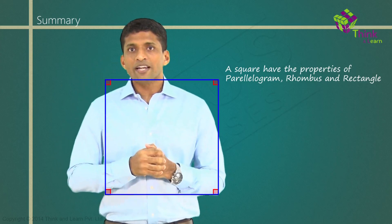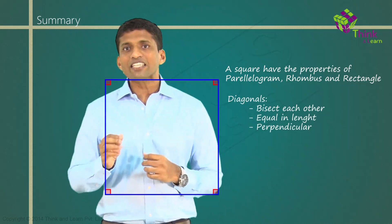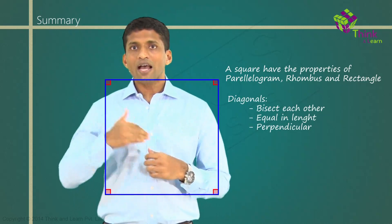So diagonals will bisect each other. They will be equal and they will be perpendicular to each other. So it's very simple. You can get a complete overview just like that. I am very sure that you know a lot more about quadrilaterals by this time.